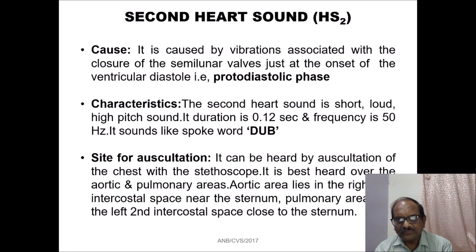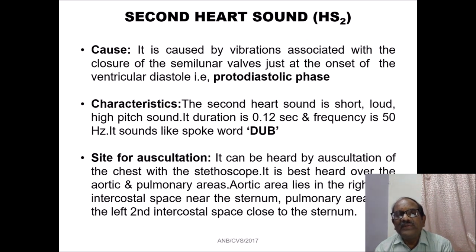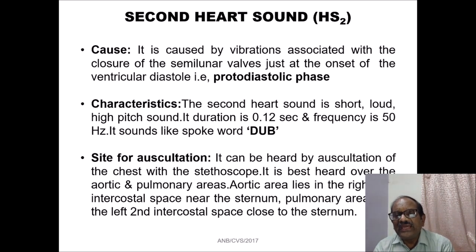What is the cause of the second heart sound? It is caused by vibrations associated with closure of the semilunar valves just at the onset of ventricular diastole — that is, at the beginning of the protodiastolic phase. What are its characteristics? The second heart sound is short, loud, and high-pitched. Its duration is 0.12 seconds and its frequency is 50 hertz. It sounds like the spoken syllable 'dub'. It can be heard by auscultation of the chest with the stethoscope. It is best heard over the aortic and pulmonary areas. The aortic area lies in the right second intercostal space near the sternum, and the pulmonary area is in the left second intercostal space close to the sternum.